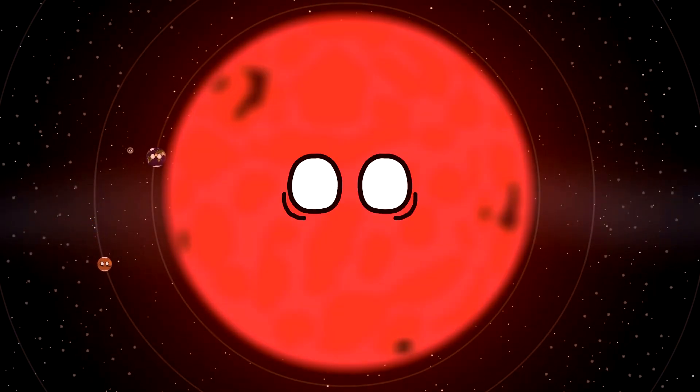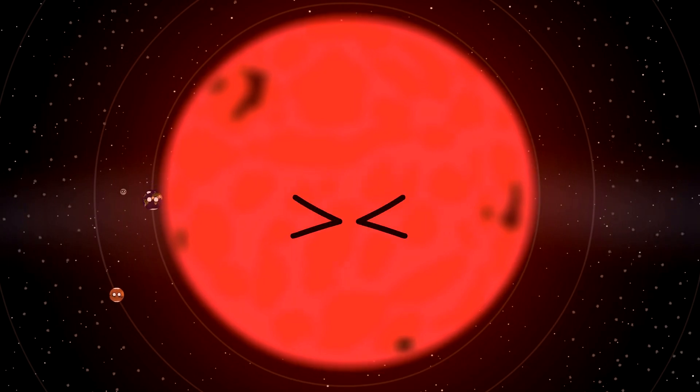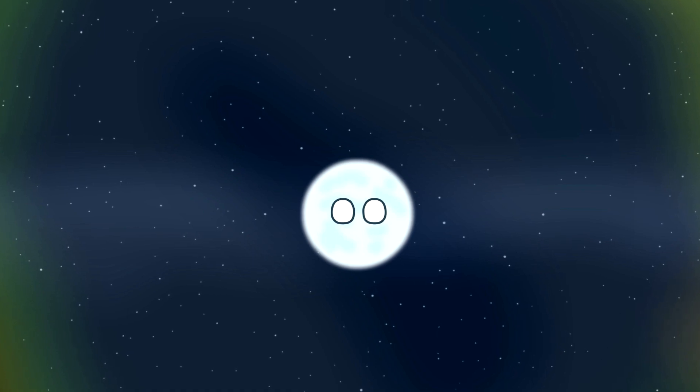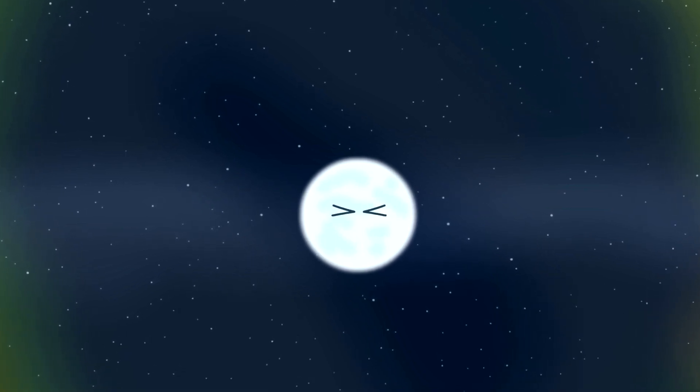Eventually when the nuclear fuel will completely run out, I will eject my outer envelope and it will turn to a beautiful planetary nebula while my core will collapse into a white dwarf. This is a very dense star in which nuclear fusion no longer occurs.